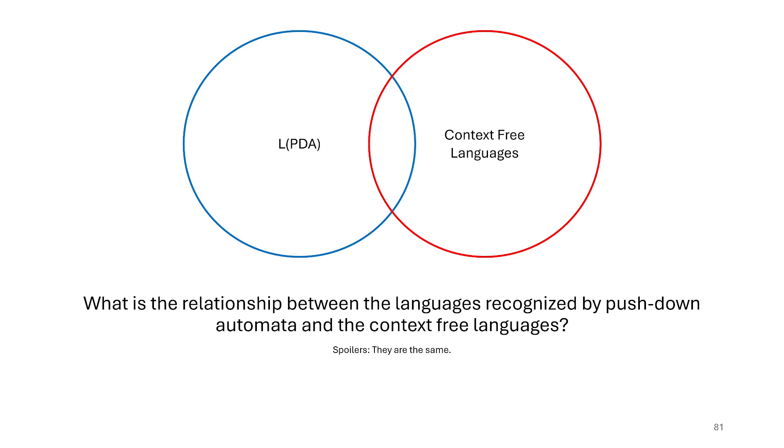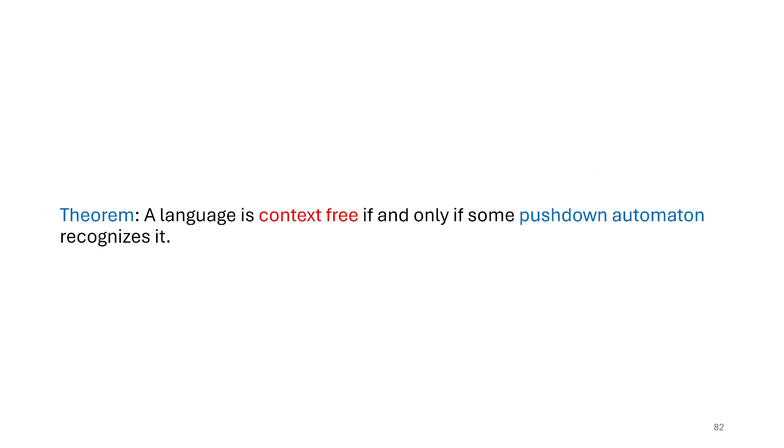However, I am covering this material at the same time because they are, in fact, spoilers, equivalent in power. So this is the theorem then that we would want to prove: a language is context-free if and only if some pushdown automaton recognizes it. Again, there's two directions here we see in the if and only if.